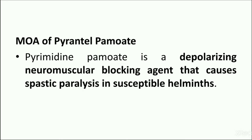The mode of action of pyrantel pamoate: pyrantel pamoate is a depolarizing neuromuscular blocking agent, and that is why it causes spastic paralysis in the susceptible helminths. Because of this paralysis, the worm loses its grip on the intestinal wall and is passed out of the system.